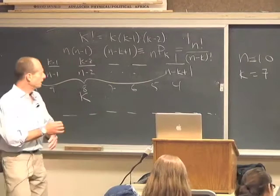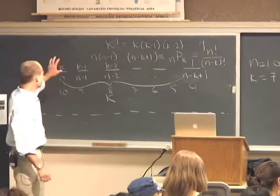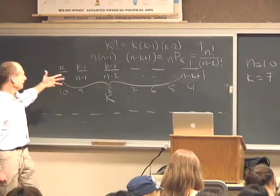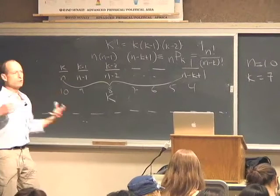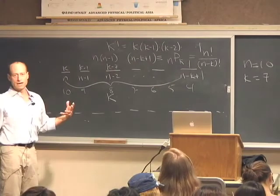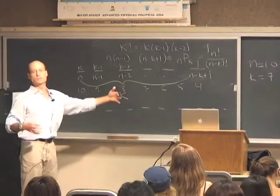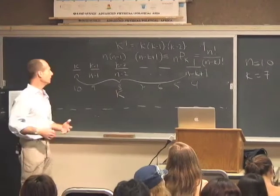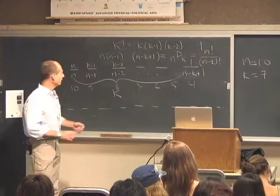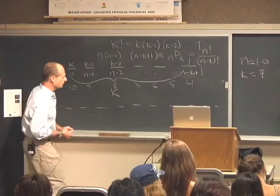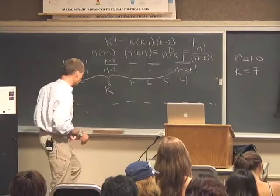Well, we also said that we could get k of n things into some order by first picking the set of k things without regard to their order, and then putting them in some order. So instead of if the 10 objects were...